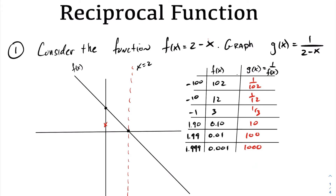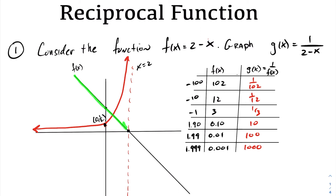Graphically, as we approach 2 from the left-hand side, the reciprocal function approaches positive infinity. You can see the reciprocal function now: as f(x) approaches 2 from the left, it's decreasing, so the reciprocal is increasing and approaches positive infinity. Conversely, as f(x) approaches positive infinity, the reciprocal function approaches 0.